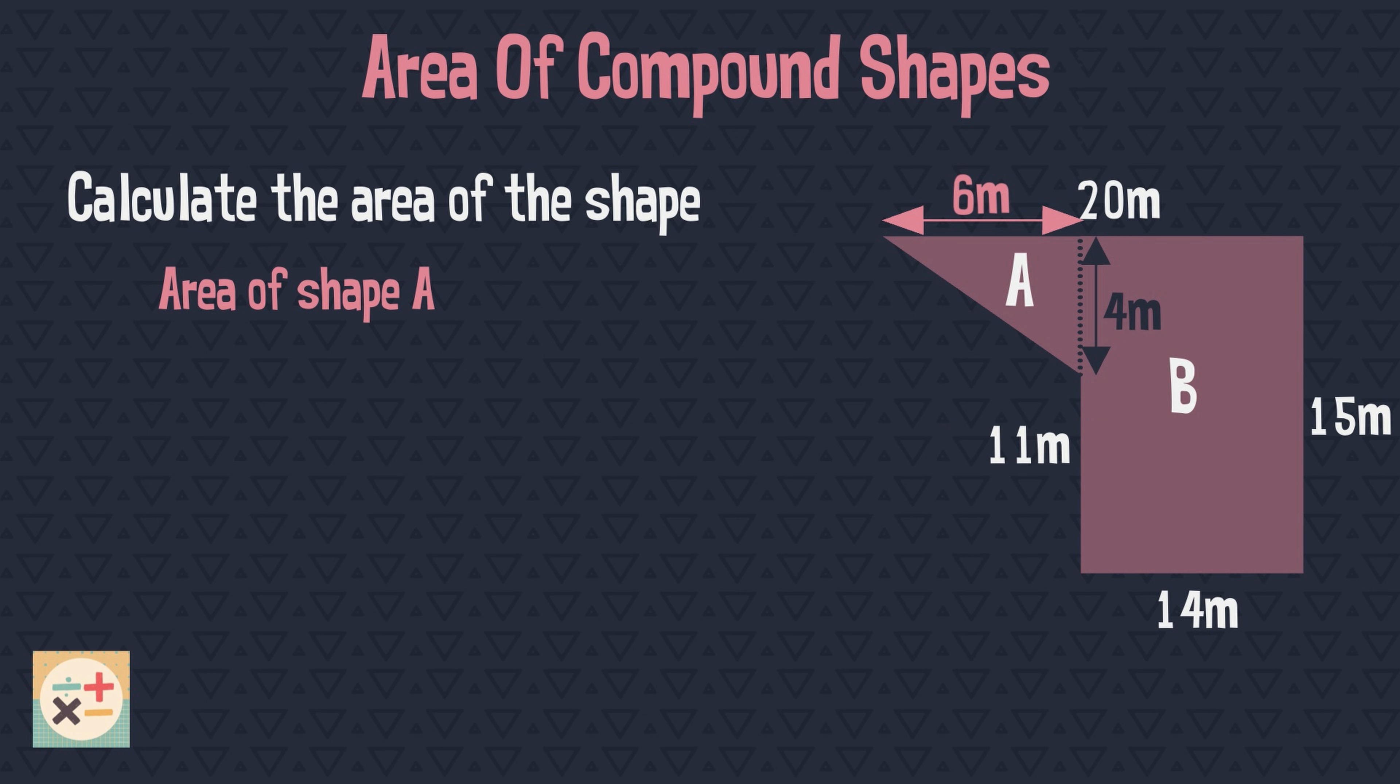Now using the formula for finding the area of a triangle, we can use the measurements we have just found. As this is a right angled triangle, either the 6 meters length or 4 meters length can be used as the base, and the other as the perpendicular height.